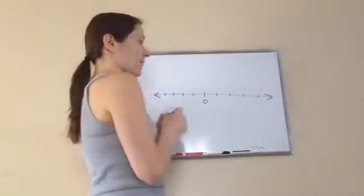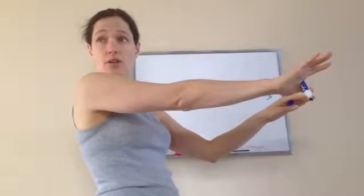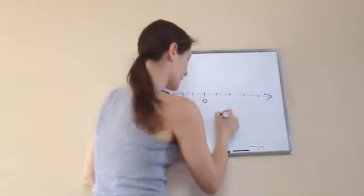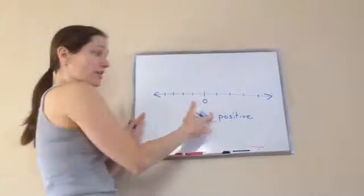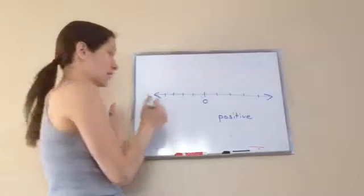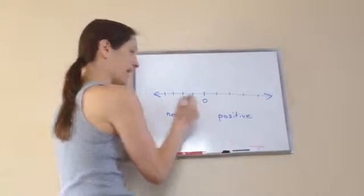Perfect. The ones on the right side, do you know what they're called? Positive numbers. I'm gonna write the word positive. And the words on the left of the zero are called negative numbers.